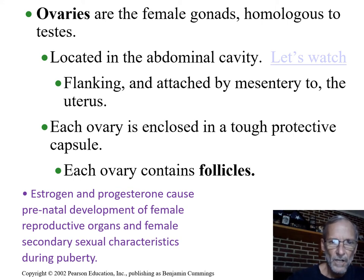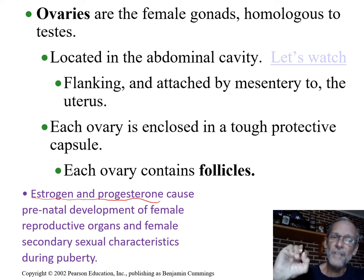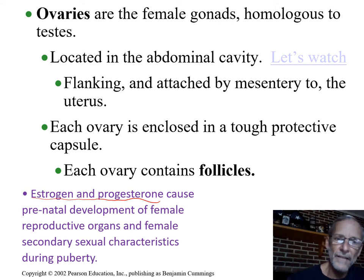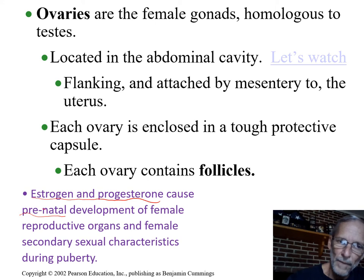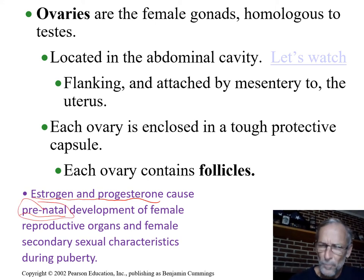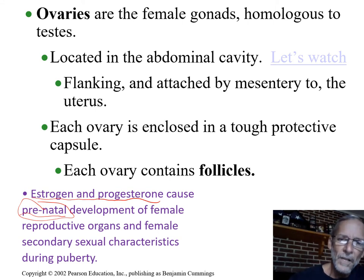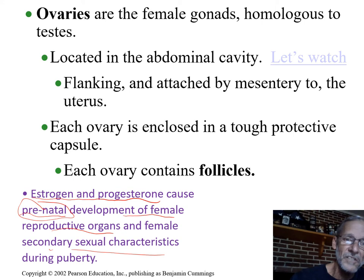Estrogen and progesterone — like testosterone in the male — are the female hormones. Before birth, prenatal, they cause development of both the organs and secondary sex characteristics, just like testosterone did for males, but much of that development also happens later during puberty.